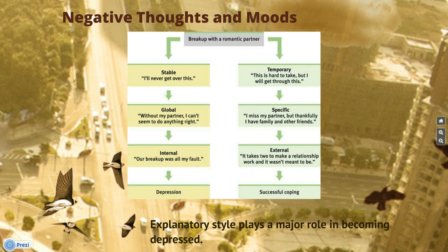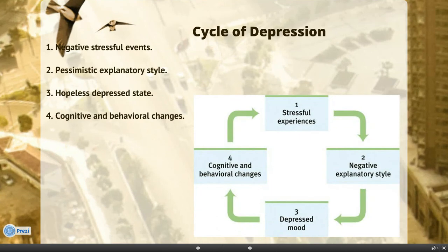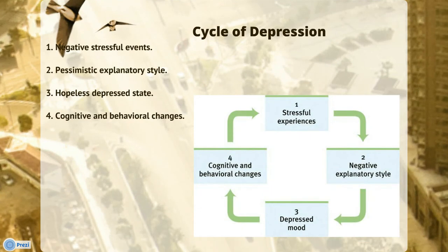Explanatory style plays a major role in becoming depressed. There is a cycle of depression: stressful events can lead to a negative explanatory style, which can lead to a depressed mood, which can then lead to cognitive and behavioral changes. It can be hard to break out of this cycle, but if a person has the will to do so, they can very possibly do it.